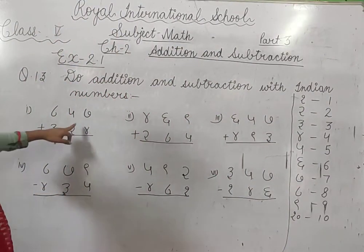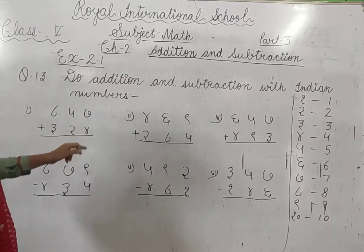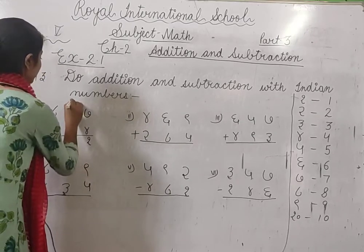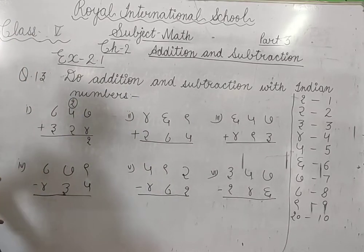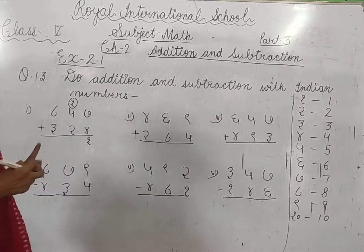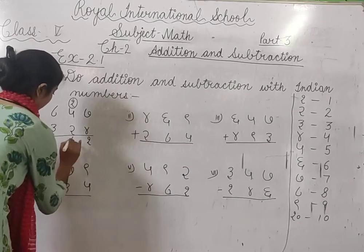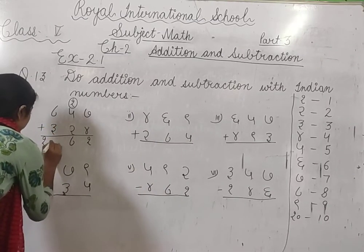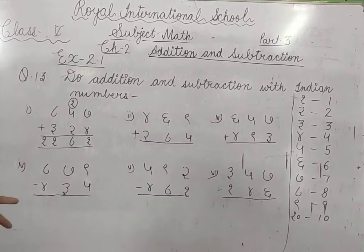So questions start karen. First addition hai: 7 plus 4. 7 plus 4 is 11. 1 and 1 here, 11 hota hai. 1 niche likhenge, 1 carry forward hogi. Then 5, 5 plus 1 is 6, 6 plus 2 is 8. Then 8 plus 3 is 11. It's done.